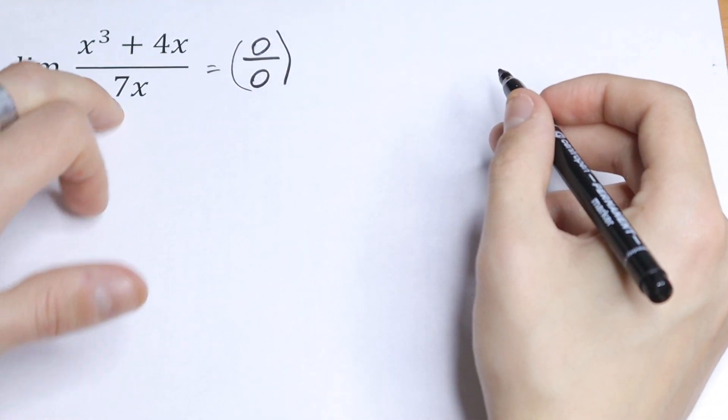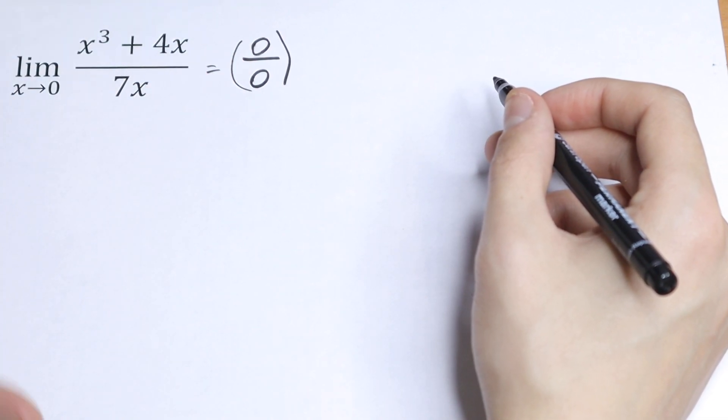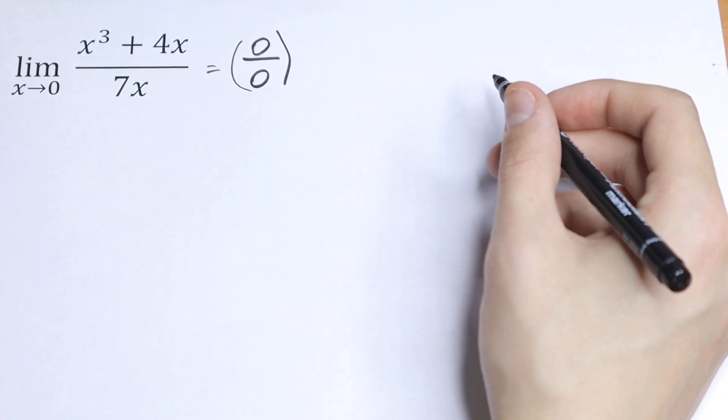So we have 0 over 0. 0 over 0 is undefined, so we don't know what the value represents, so we need to use a little bit of a trick right here to cancel this undefined expression.